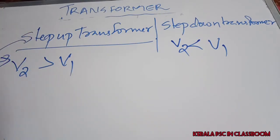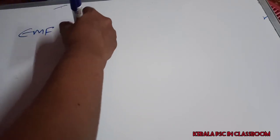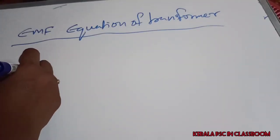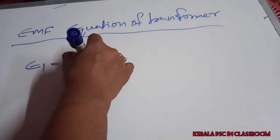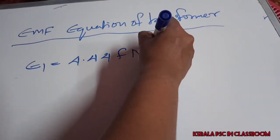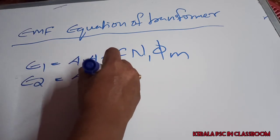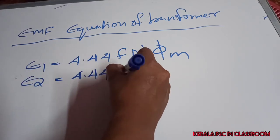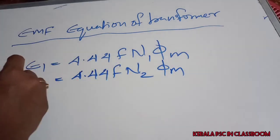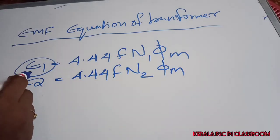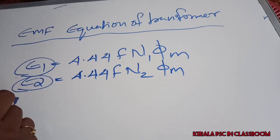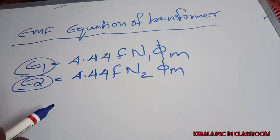So there are two types of transformer: step-up transformer and step-down transformer. Now, the EMF equation of the transformer is very important. E1 = 4.44 × F × N1 × φ, and E2 = 4.44 × F × N2 × φ, where E1 is the primary side and E2 is the secondary side.